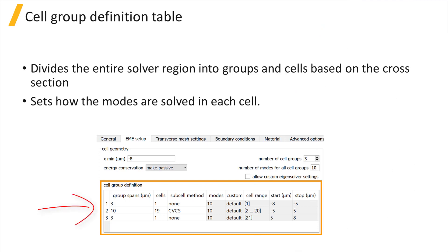The cell group definition table defines how the solver region is divided into smaller groups and cells based on the cross sections of the device and how the modes are solved in each cell.